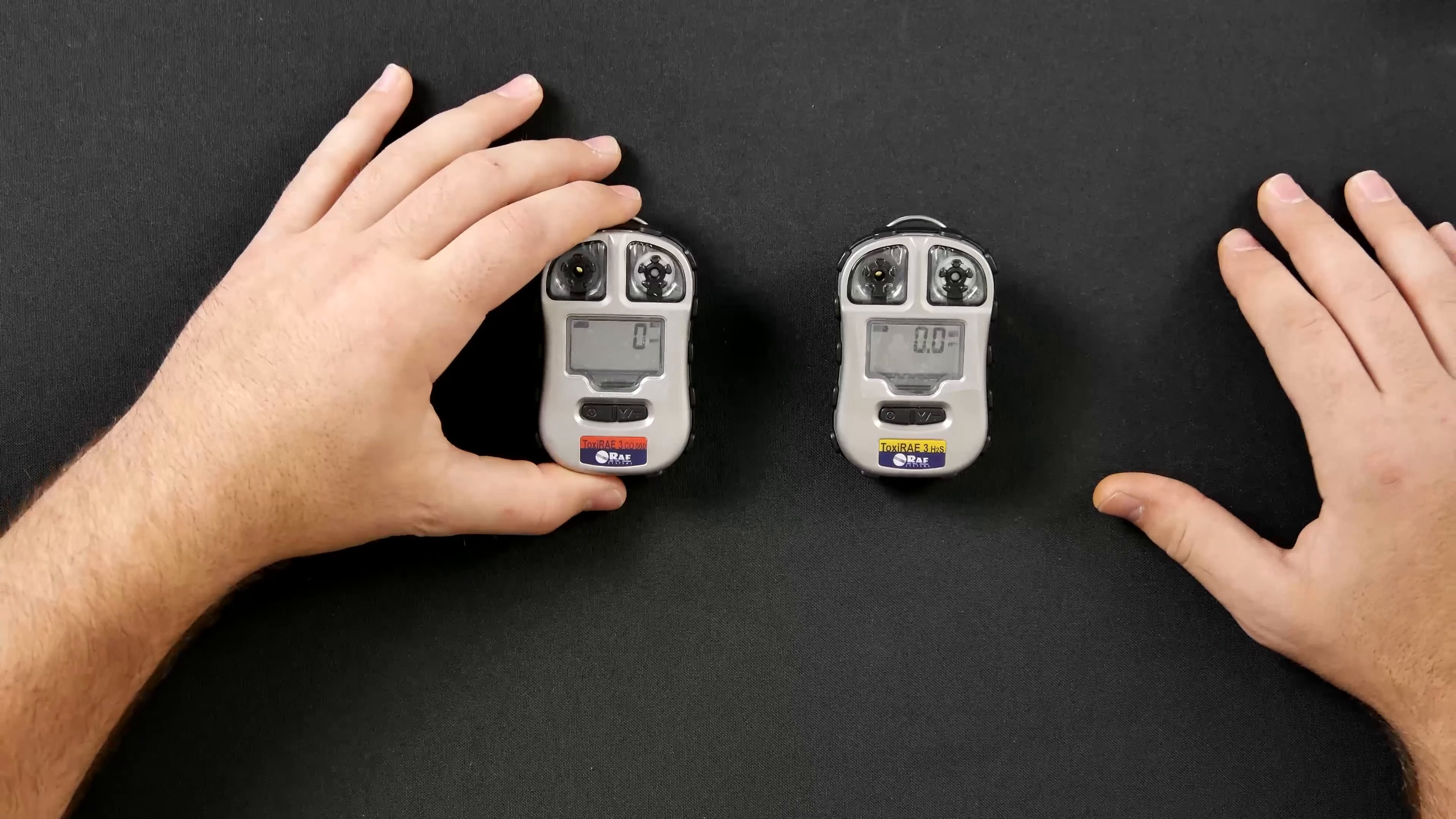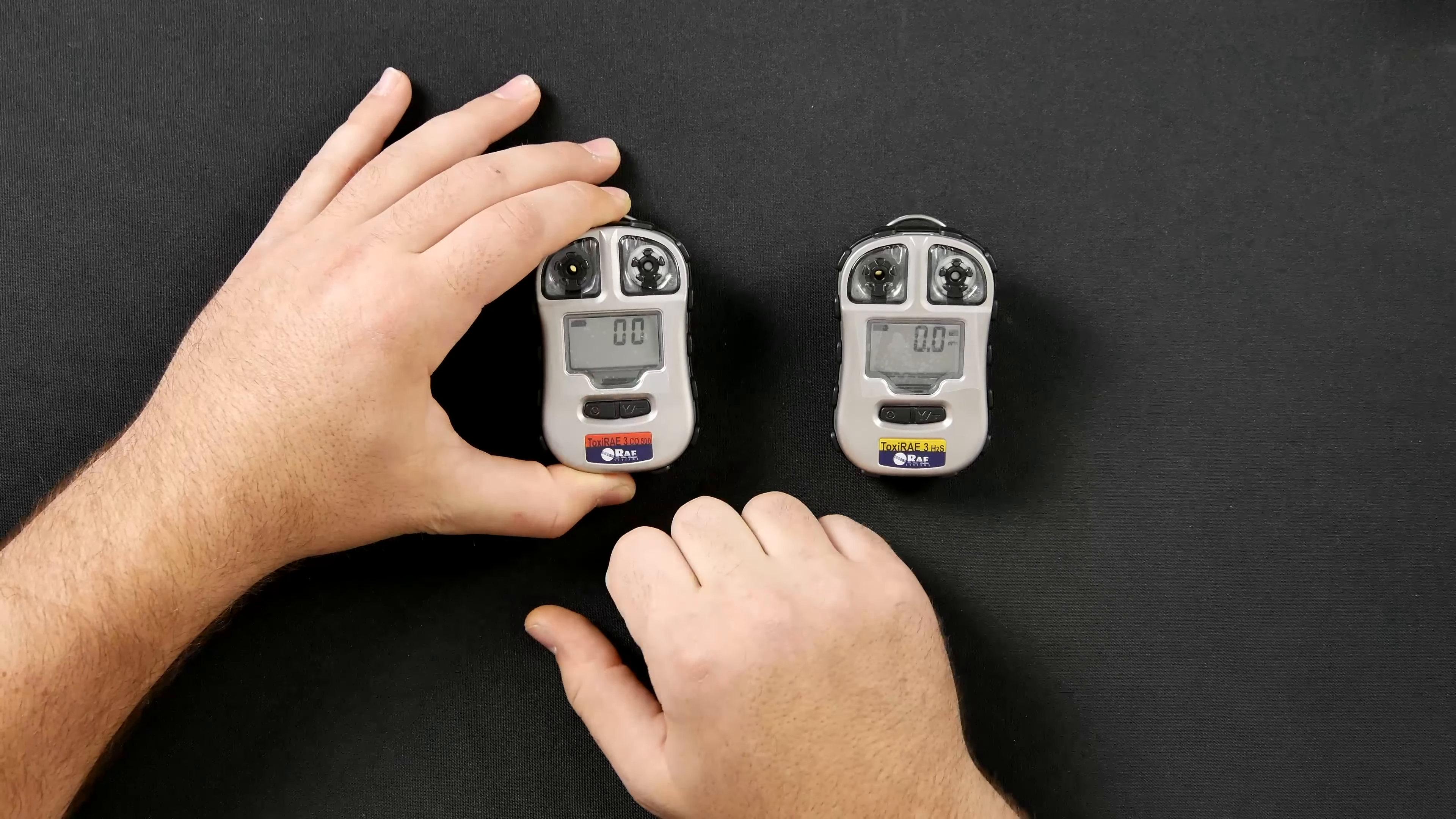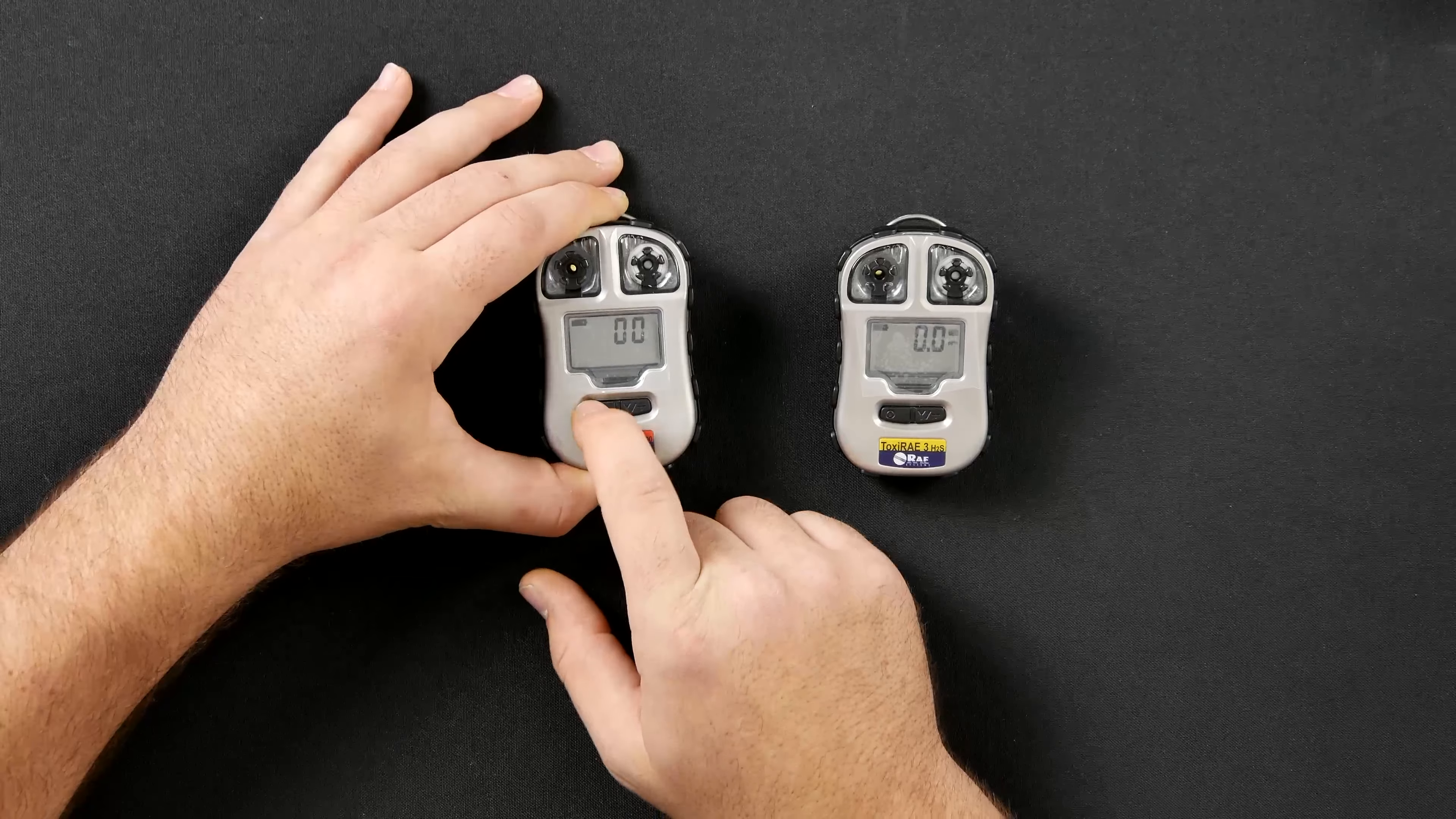To start with a fresh air calibration, you will have to hold down both buttons for approximately 3 seconds. It will then come to a standard code. The code standard is 111. You will have to use the Y plus button to change the number to 1 and the mode button to switch over.